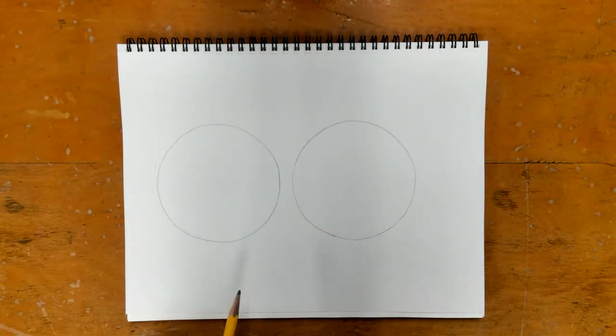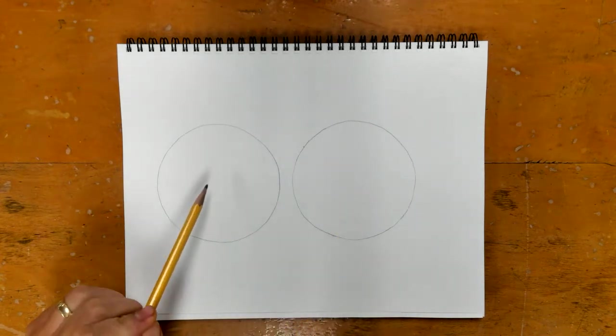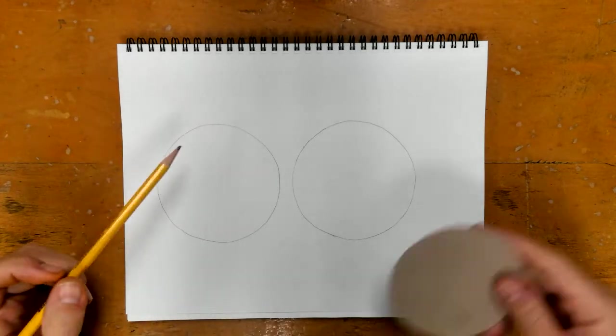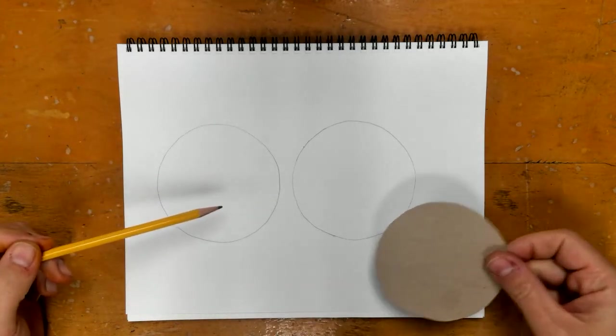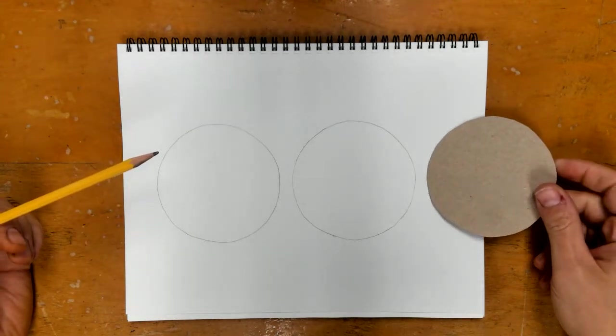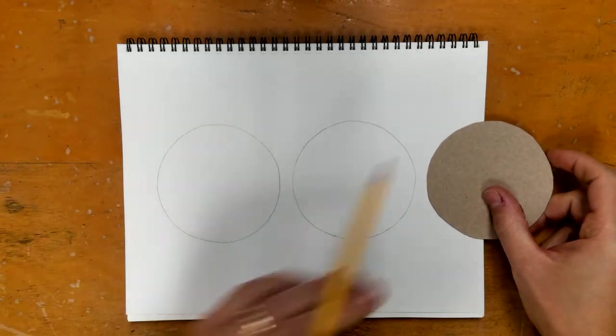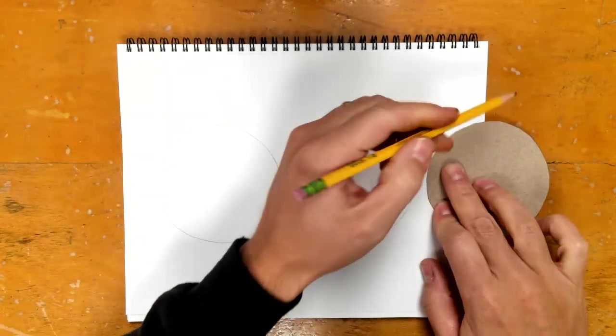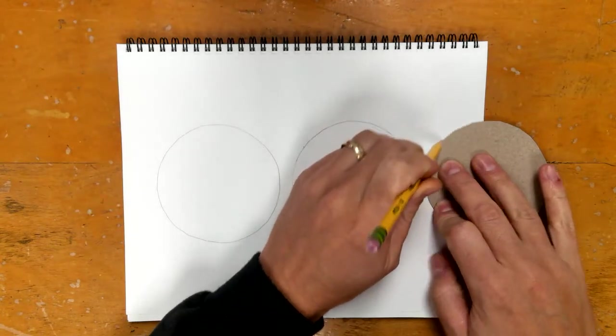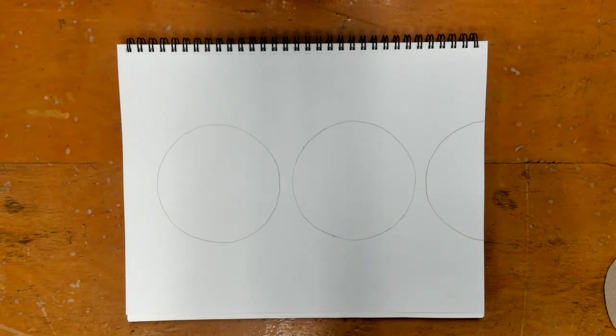Now for the third one, we're going to have three but do I have room for a third one? Depending on where you put it you might not. For this one I'm going to put it at the same height but I'm only going to be able to trace part of it. I'm going to go off the edge of the paper. So we have right now one, two, three circles.